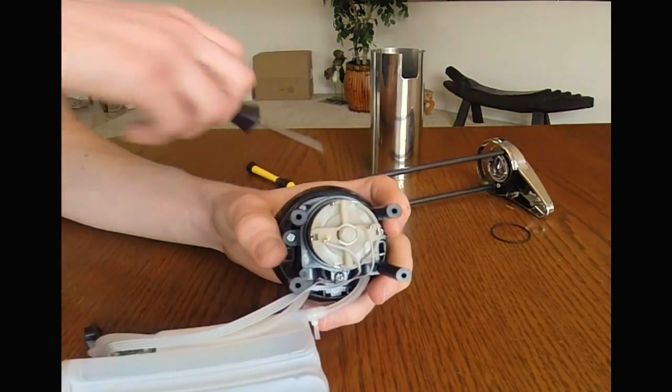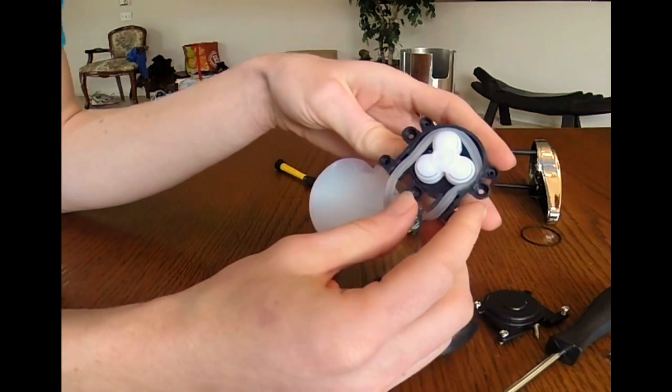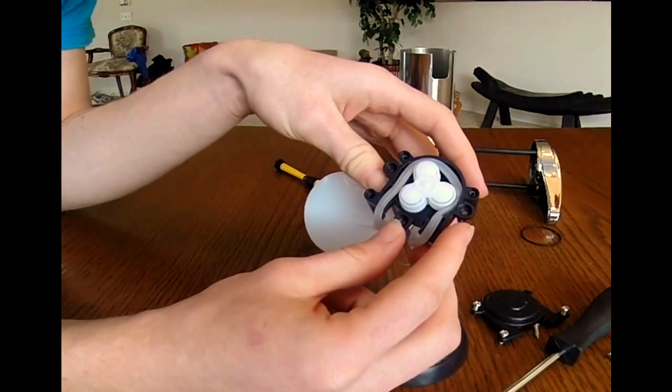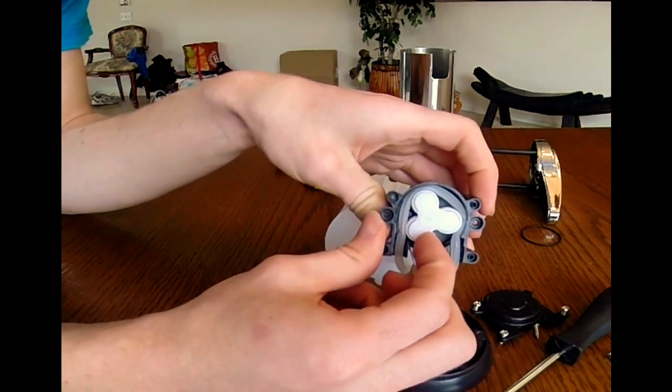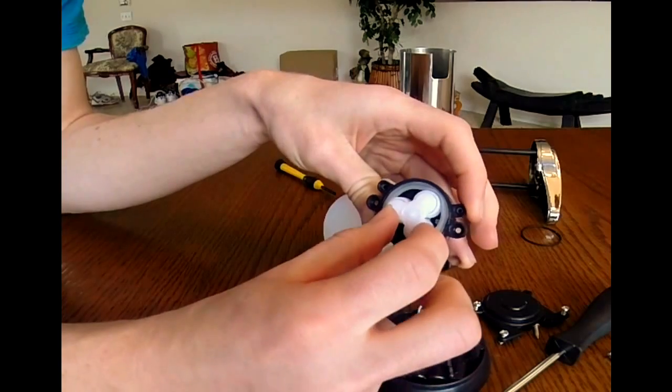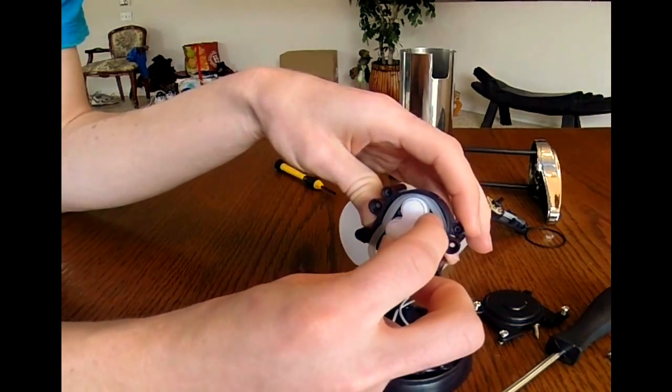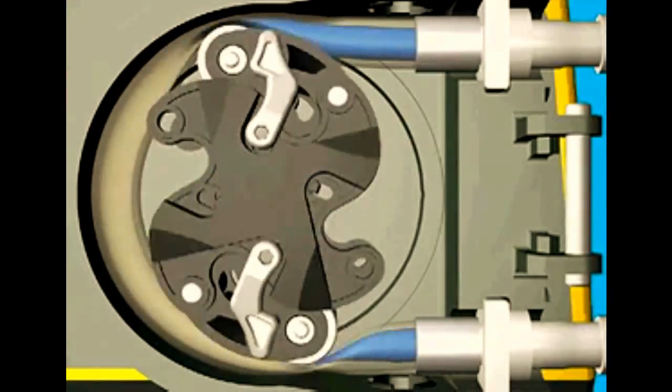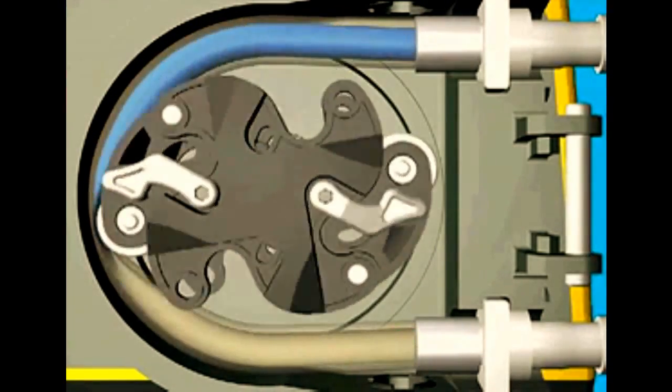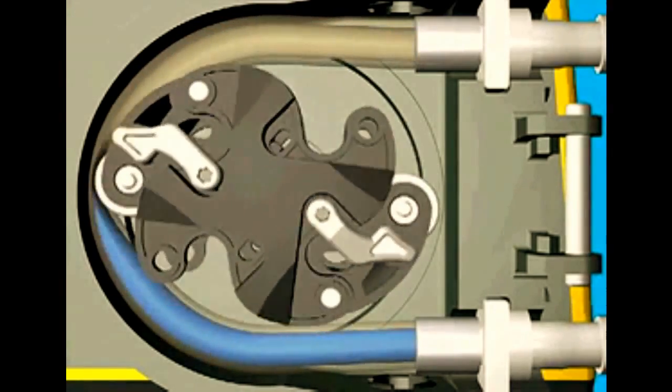We've got our motor. This peristaltic pump motor's pretty neat. As it turns around, it squishes this tube and causes the liquid to come out. It forms a sort of vacuum. And as you can see in this animation, it works well for fluids and it can dispense a controlled amount of the fluids.